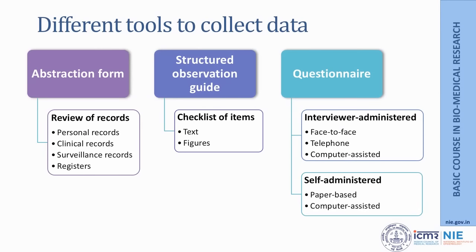Secondly, another tool we have for collecting data is a structured observation guide, which is very useful when we would like to document certain processes — whether they are happening, the way they are happening, whether they are happening in time or not, and whether the objectives are met. For this purpose, we may use a checklist of items that we would like to collect data on, which could be either textual or figurative.